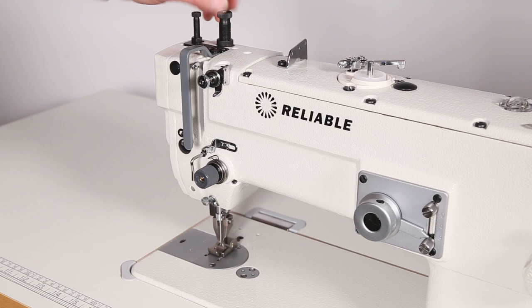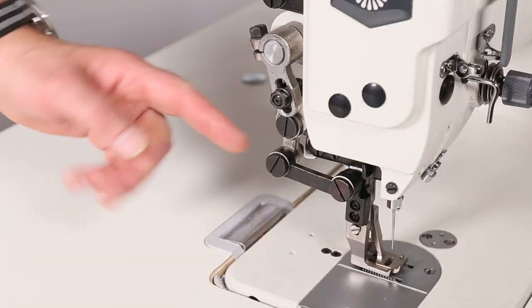This adjustment is the amount of pressure that you're going to put on your foot. By turning it clockwise, it increases the pressure; counterclockwise decreases the amount of pressure on your foot as you're sewing.